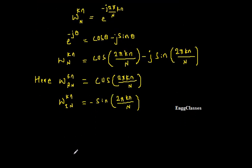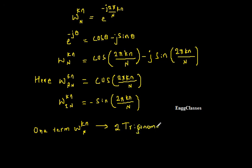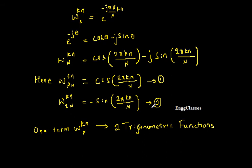Cosine and sine are nothing but trigonometric functions. So one term W_N to the power kn will have two trigonometric functions — one for the cosine term and one for the sine term. The evaluation of these sine and cosine terms gives us two trigonometric functions per twiddle factor term.